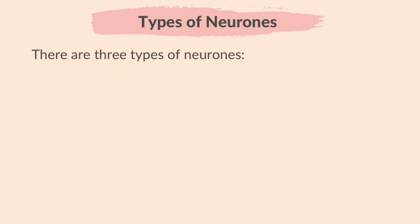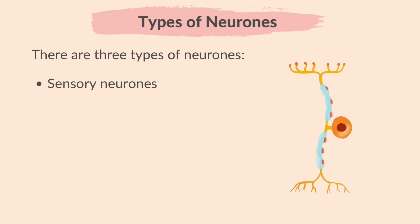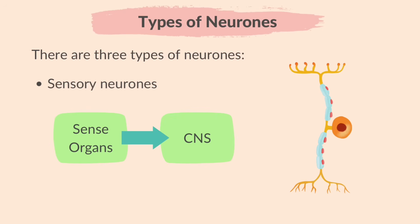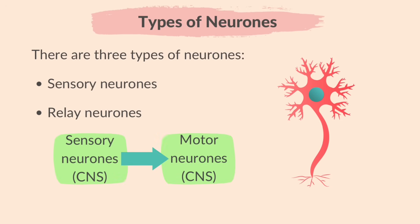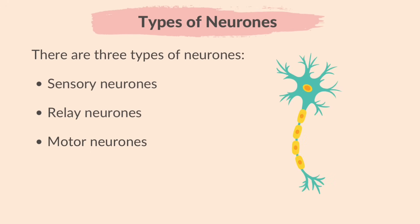There are three types of neurons. Sensory neurons carry impulses from the sense organs to the central nervous system, i.e. the brain or the spinal cord. Relay neurons are found inside the central nervous system and connect sensory and motor neurons. And motor neurons carry impulses from the central nervous system to effectors, i.e. the muscles or glands.